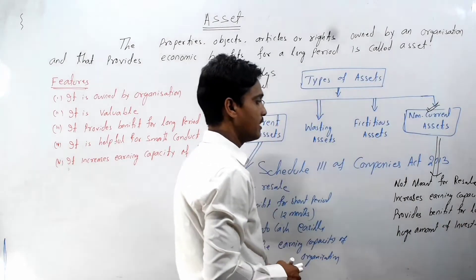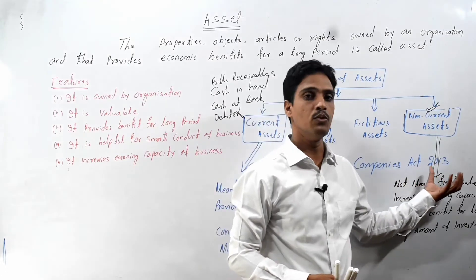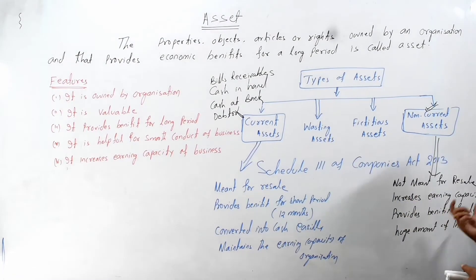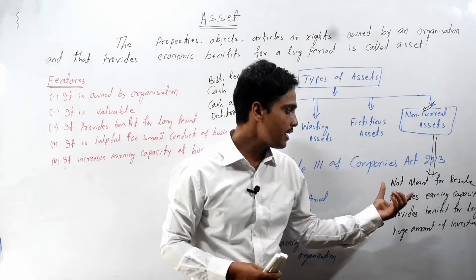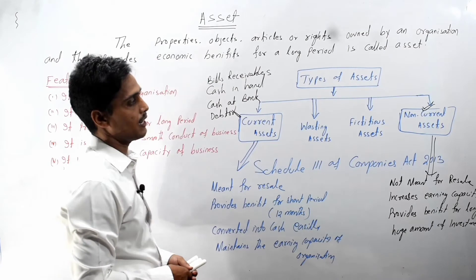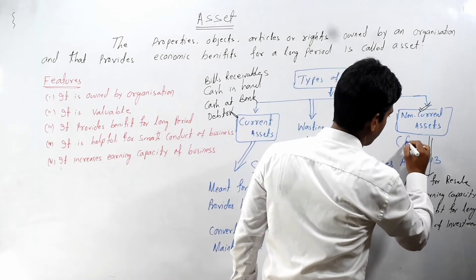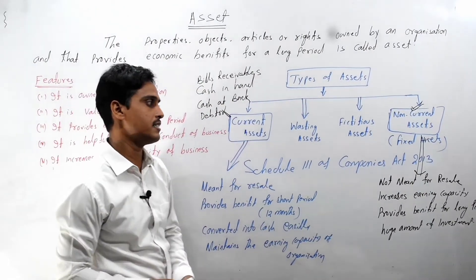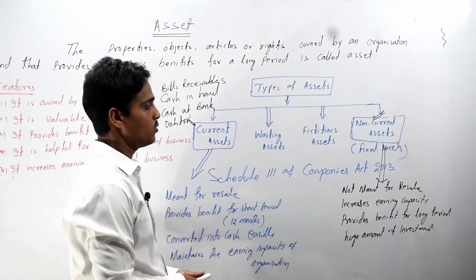The asset which is purchased for use — not for resale purposes — and that provides benefit for a long period and also increases the earning capacity of the business is called a non-current asset. It is also called a fixed asset.